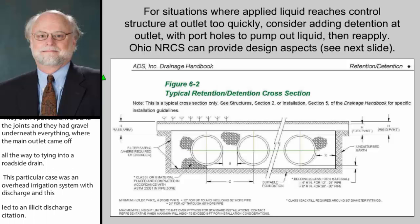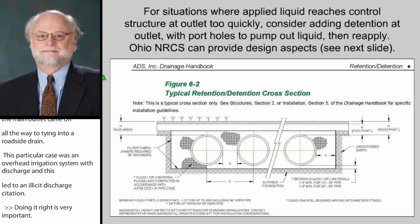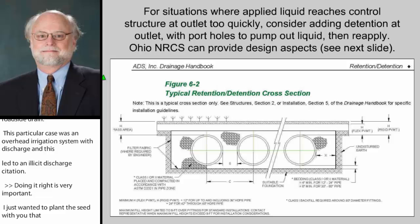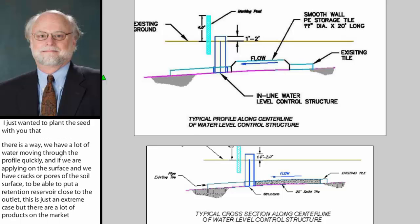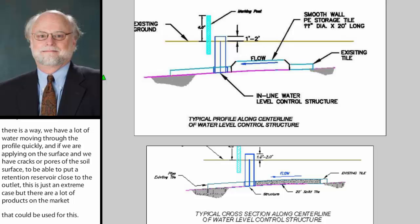I want to plant the seed that when there is a lot of manure water moving through the profile quickly — particularly when applying on the surface with pores or cracks in the soil — you can put a retention reservoir close to the outlet. There are a lot of products on the market for this. Ohio NRCS has come up with drawings that put a retention section in the outlet pipe on the upstream side of the structure, with flashboards raised near the surface. With a port going to the surface, you could pump that water out if a large amount fills the detention area, and then reapply it back on the landscape.